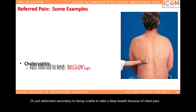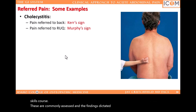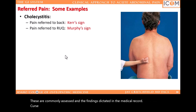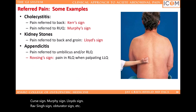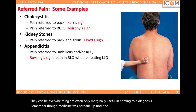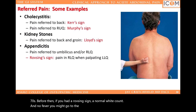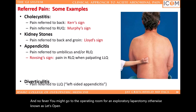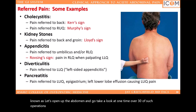Let's walk through these different, sort of unreliable signs you'll learn about in your medical skills course — Kerr's sign, Murphy's sign, Lloyd's sign, Rovsing's sign, Obturator's sign, etc. They can be overwhelming and are often only marginally useful in coming to a diagnosis. Remember, medicine was barbaric up until the discovery of CT and ultrasound in the late 70s. Before then, if you had a Rovsing's sign, a normal white count, and no fever, you might go to the operating room for an exploratory laparotomy — otherwise known as 'let's open up the abdomen and go take a look.' At one time, over 30% of such operations showed no findings requiring surgery.